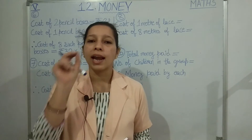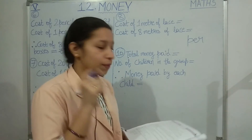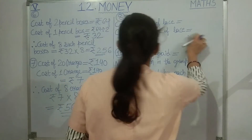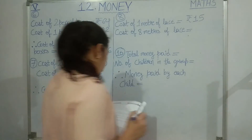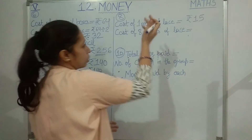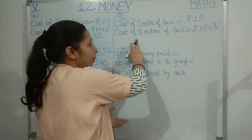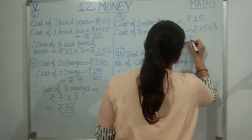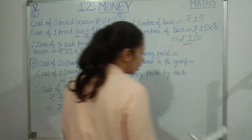Question 8: Ritu bought a lace at the rate of rupees 15 per meter. Underline the word 'per' - per means one, always remember that. So cost of one meter of lace is rupees 15. What is the cost of 8 meters of lace? Since the cost of one meter is given, we multiply: 15 multiplied by 8. Fifteen eights are 120, so 8 meters of lace costs rupees 120. Question 9 will be your homework.